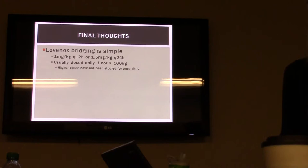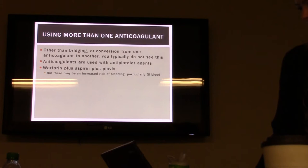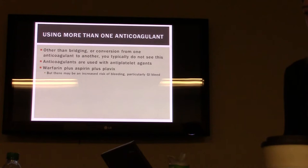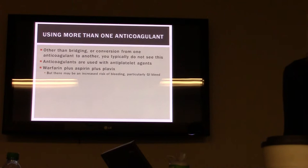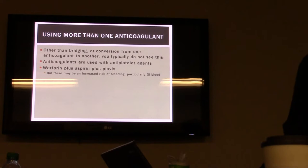Going over bridging again: the therapeutic dose of Lovenox is 1 mg/kg Q12 hours, or 1.5 mg/kg daily — usually dosed daily unless the patient is over 100 kilograms. As far as using more than one anticoagulant, other than bridging you won't see it too often and it should raise a red flag. The only other time is if a patient is being converted from one oral anticoagulant to another. You can use anticoagulants with antiplatelet agents — somebody with a stent and AFib might be on warfarin, Plavix, and aspirin, which is okay though it increases bleeding risk, with GI bleed being the main concern.